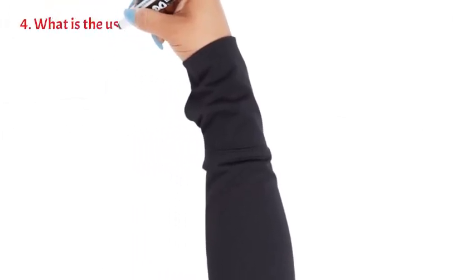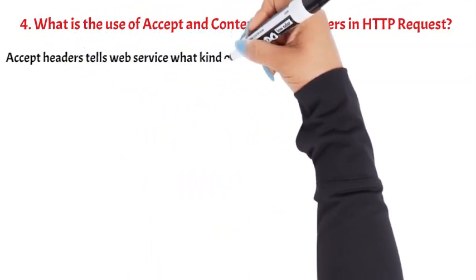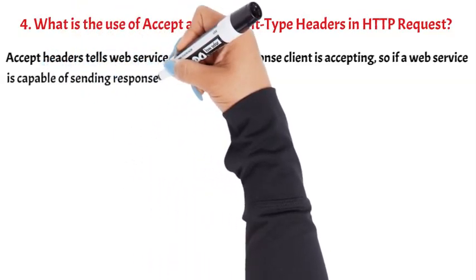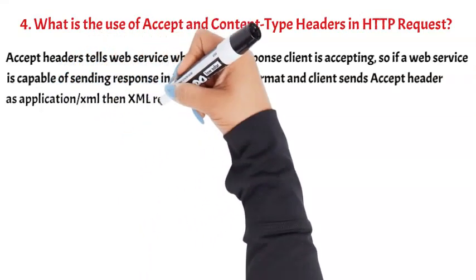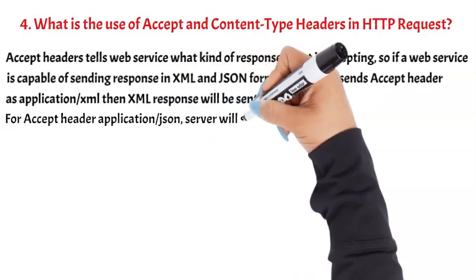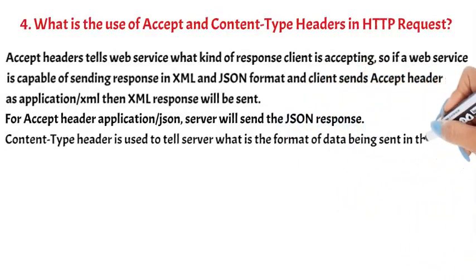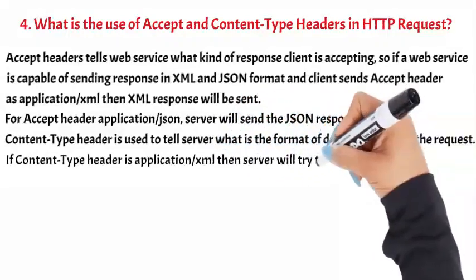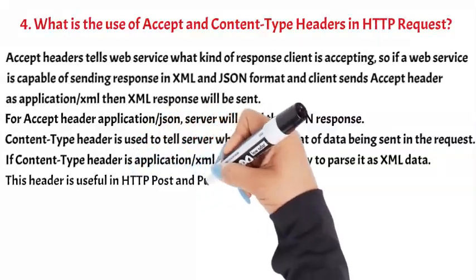Question 4: What is the use of Accept and Content-Type headers in an HTTP request? The Accept header tells the web service what kind of response the client is accepting. So if a web service is capable of sending a response in XML and JSON format, and the client sends an Accept header as application/XML, then an XML response will be sent. For Accept header application/JSON, the server will send the JSON response. The Content-Type header is used to tell the server the format of data being sent in the request. If the Content-Type header is application/XML, then the server will try to parse it as XML data. This header is useful in HTTP POST and PUT requests.